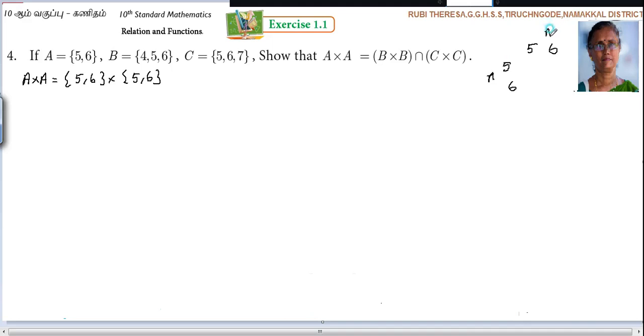This is A and this is A. So 6,6. Those who are unable to write, you can prefer this method. Otherwise you can write it directly. 5 is paired with 5 and 6, so (5,5), (5,6). Next 6 is paired with 5 and 6, so (6,5), (6,6). You can give one number first. Then you have to find out. Otherwise LHS also you can write LHS. LHS equal to. Next you are going to find out RHS.